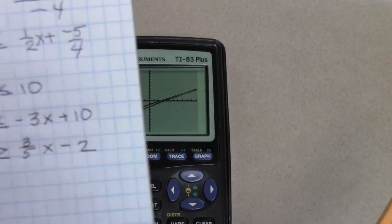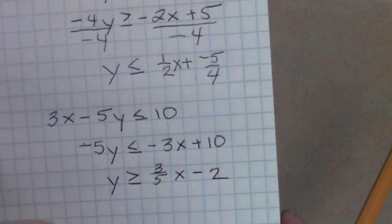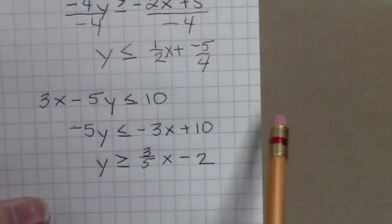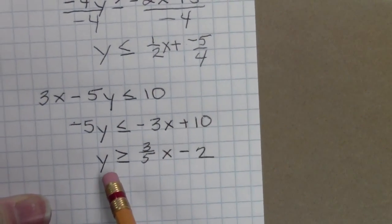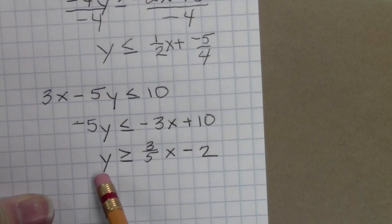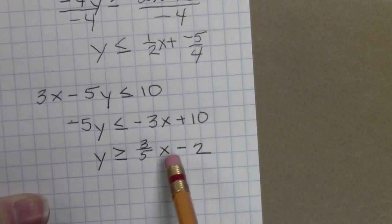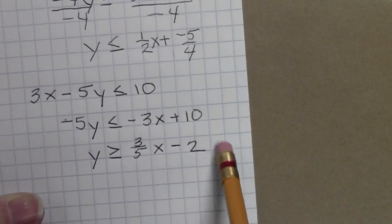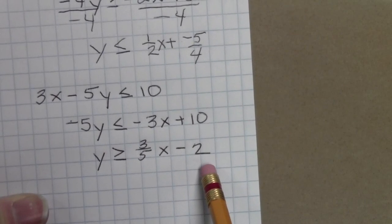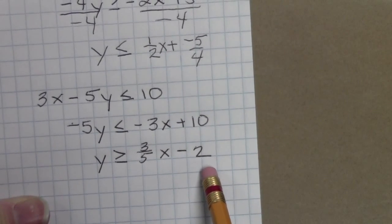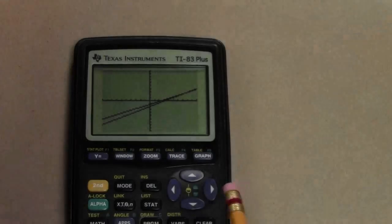Once it's graphed, you have to be very careful. Remember, the lower bound is the one where you have y is greater than that value. So make sure that you put this second equation, three-fifths x minus 2, in first when you go to do the shade function.